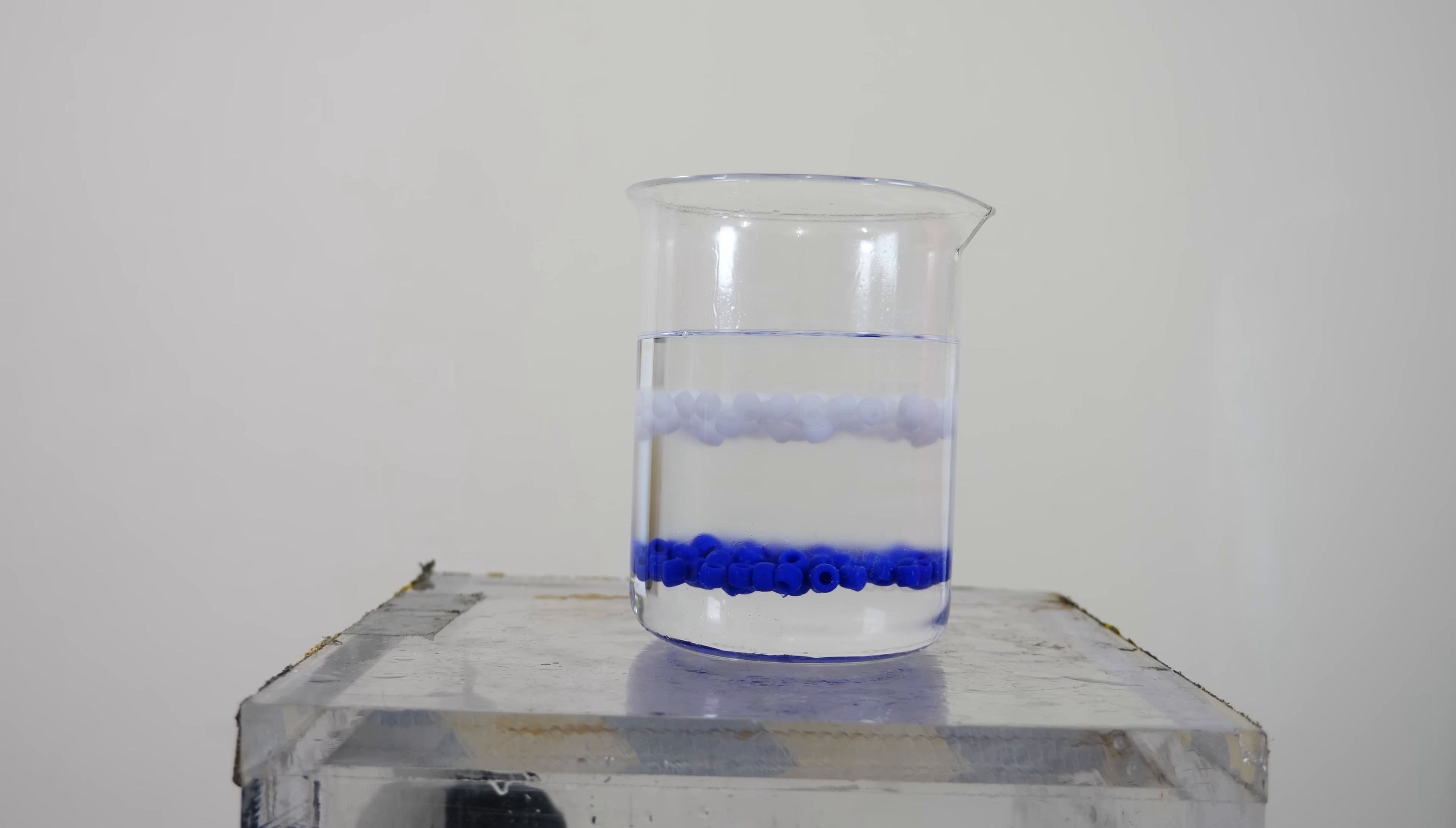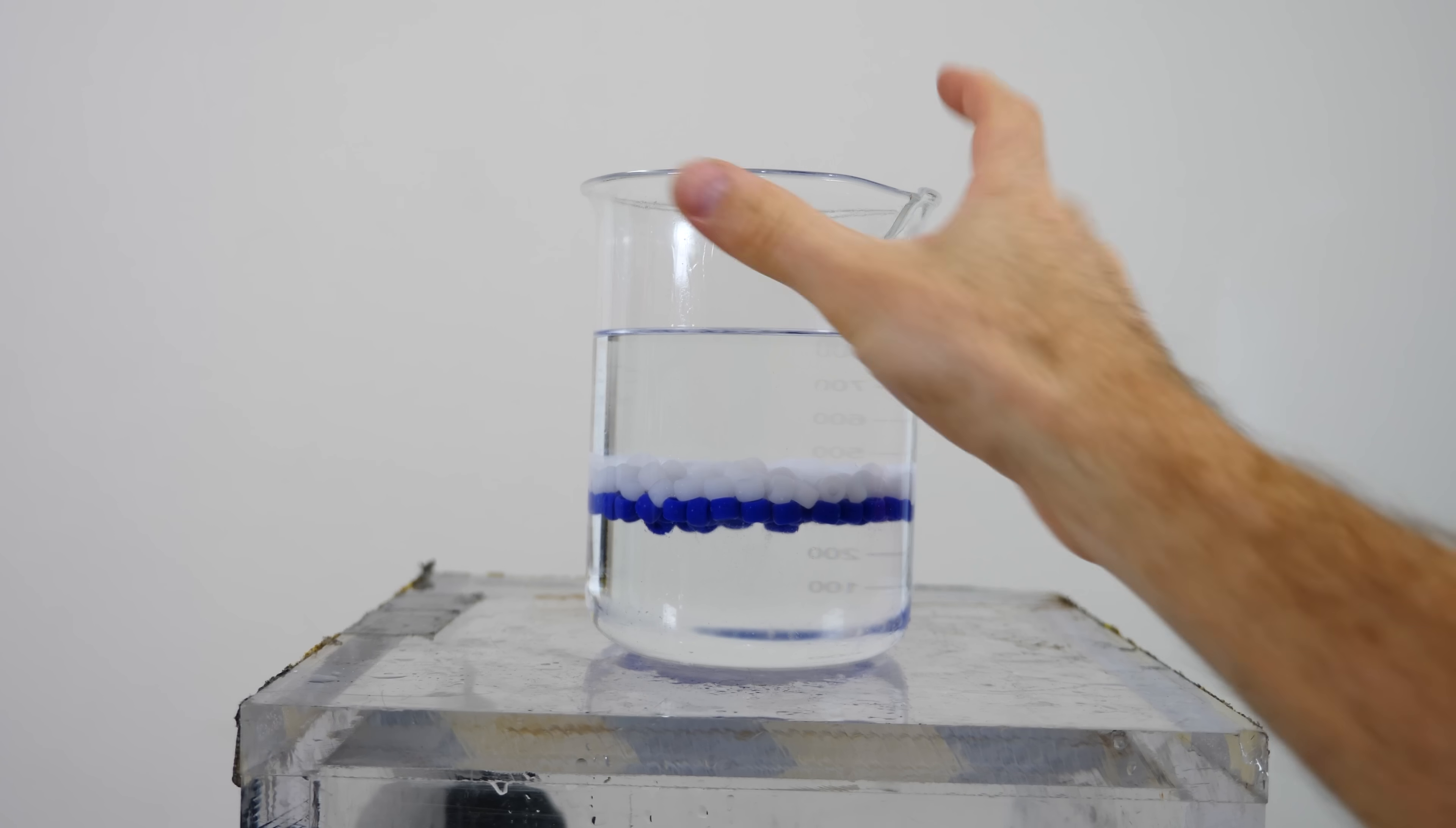And then they come back together. How is it doing this? It's weird enough that it separated them like this, but how are they actually floating right in the center of the liquid?